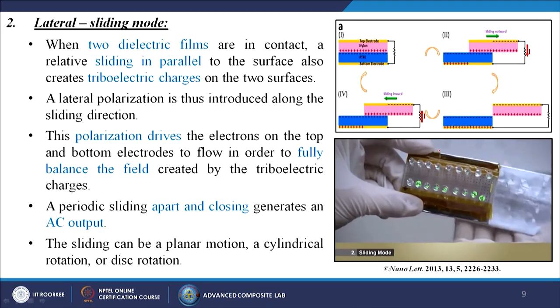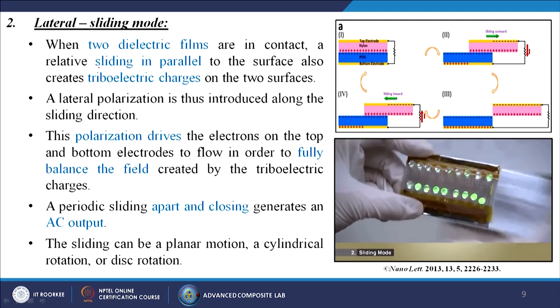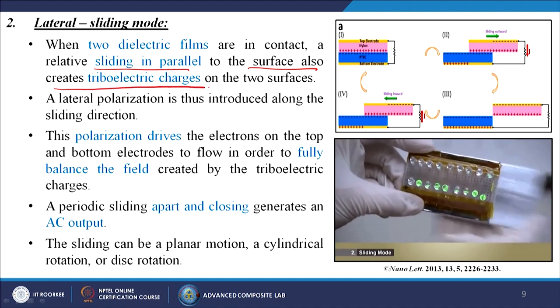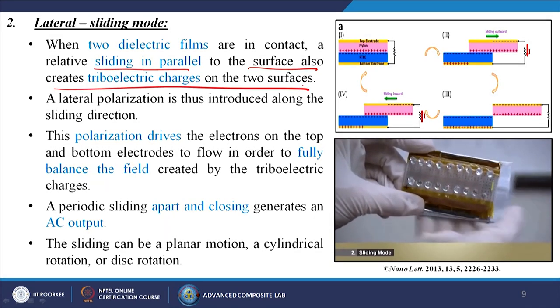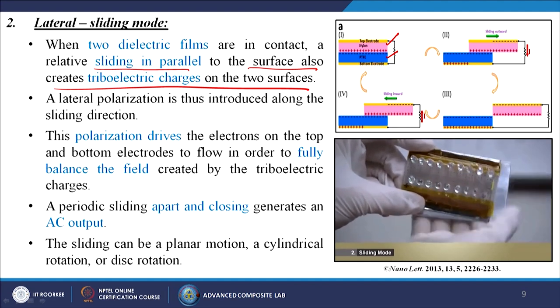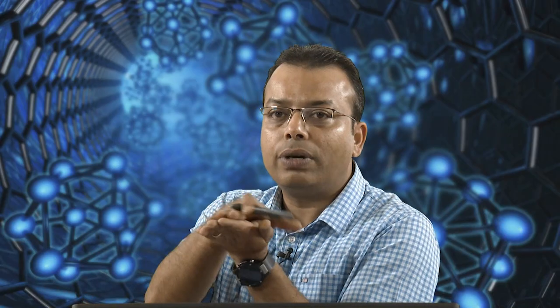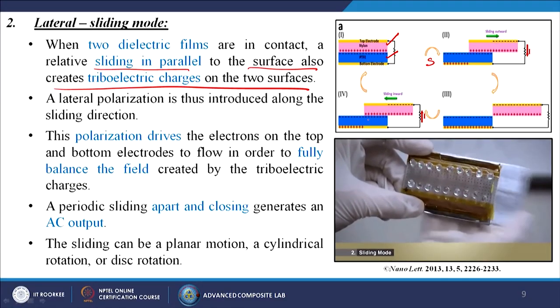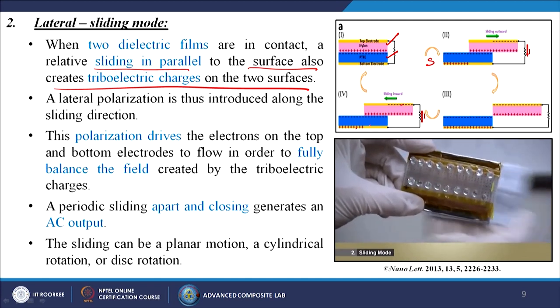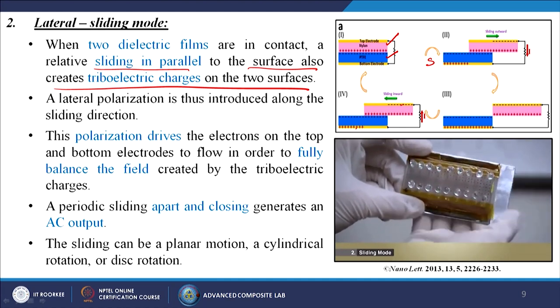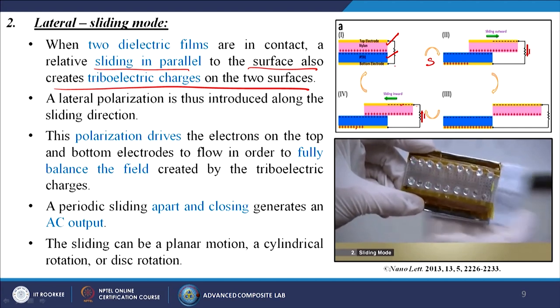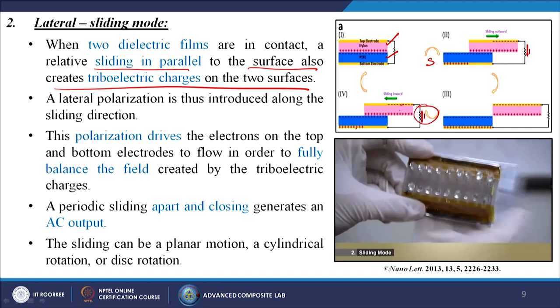Next is the lateral sliding mode. When two dielectric films are in contact, a relative sliding parallel to the surface also creates triboelectric charges on the two surfaces. In this case, we use nylon and PTFE with two electrodes — a bottom electrode and a top electrode — where one part is static and the other is dynamic. By doing the sliding contact, charge transfer takes place: since one is positive and the other is negative, the surface charges are opposite, and electrons flow from the bottom electrode to the top electrode, generating electricity.